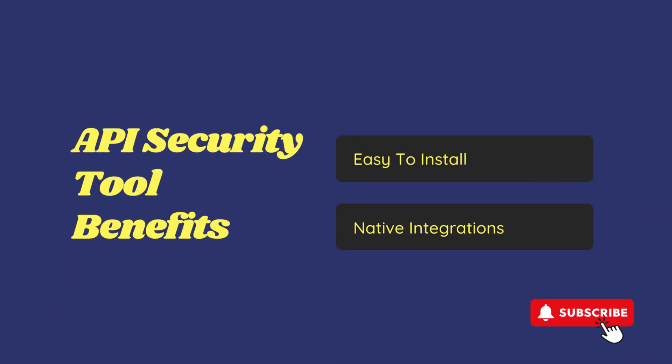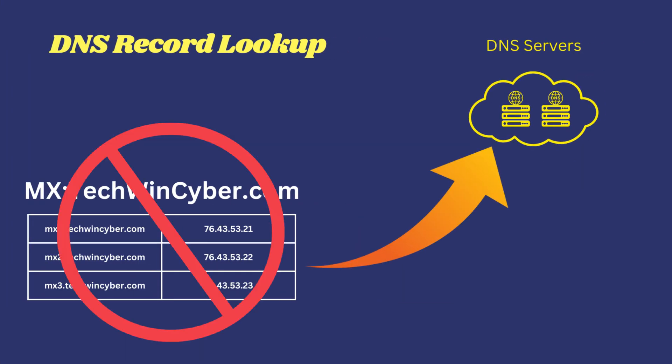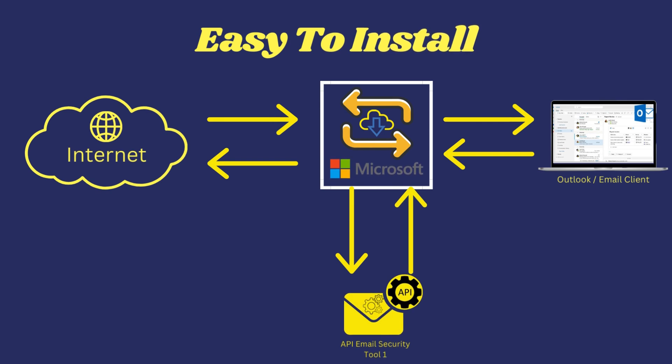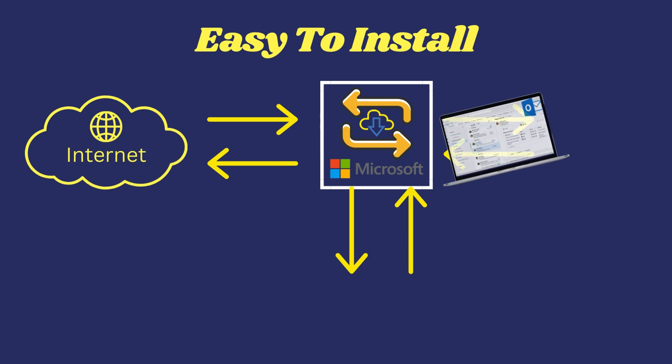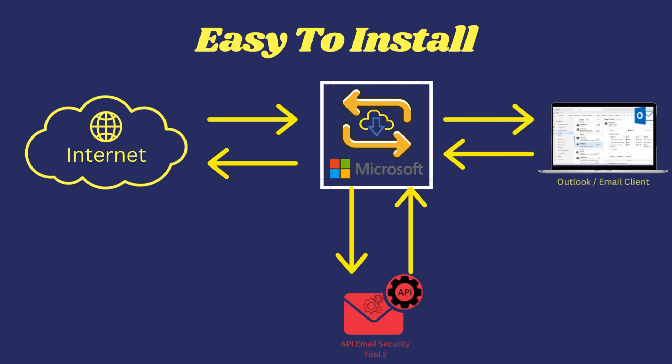It's important to understand the architecture before you understand the benefits. API email security tools don't need DNS entries like MX records, which often take time and effort to set up. Because these tools avoid complex DNS configurations, the installation process is pretty quick and easy. Usually, setting up only requires granting basic permissions, such as access to read and write to users' inboxes. Once these permissions are given, the tool can start processing emails almost immediately, and results show up in the dashboard quickly. This allows organizations to quickly deploy and try out multiple API email security solutions without long setup times.